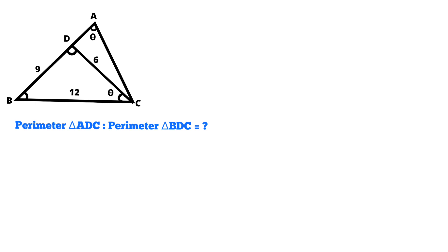Here, we can easily find out the perimeter of triangle BDC because all three side values are given in that triangle. But we don't have the side values of AD and AC in triangle ADC. So first we need to calculate the lengths of AD and AC.